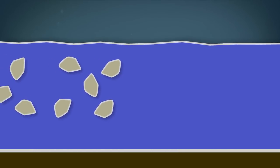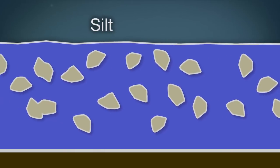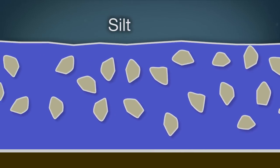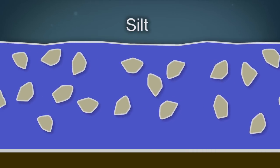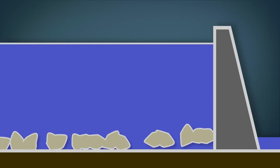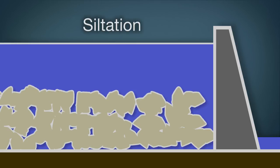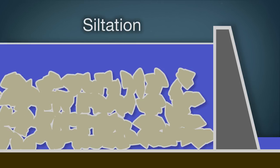Siltation occurs over time behind the dam. Silt that was carried in the moving water accumulates when the moving water becomes still and it drops its sediment load into the bottom of the lake or impounded water. Over time, a dam can fill up with silt, rendering it useless as a storage basin.